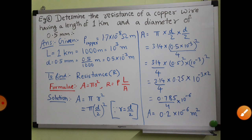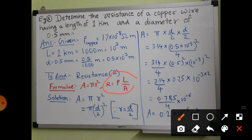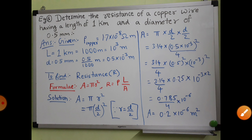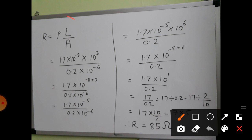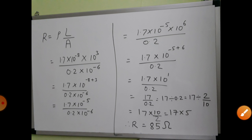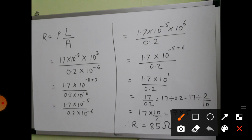So area = 0.2 × 10⁻⁶ m². Now we have found the area. Next, we put this value into the resistance formula R = ρl/A. We have to find resistance — this was only the first step. Now substituting: ρ = 1.7 × 10⁻⁸, length = 10³ m, and area = 0.2 × 10⁻⁶.